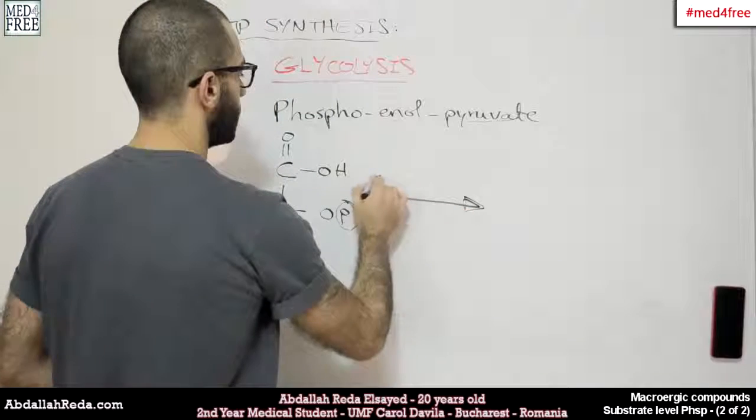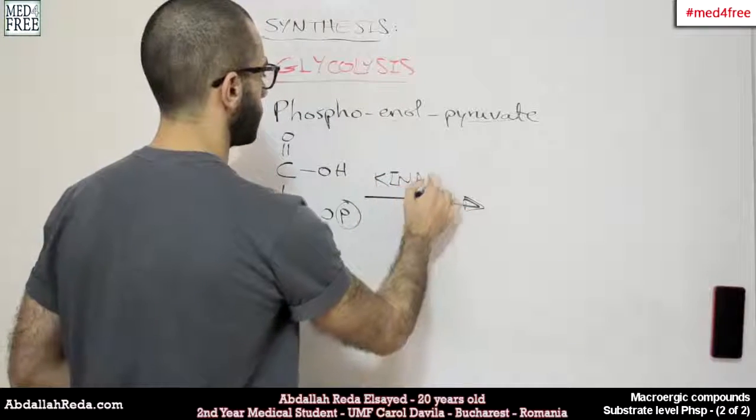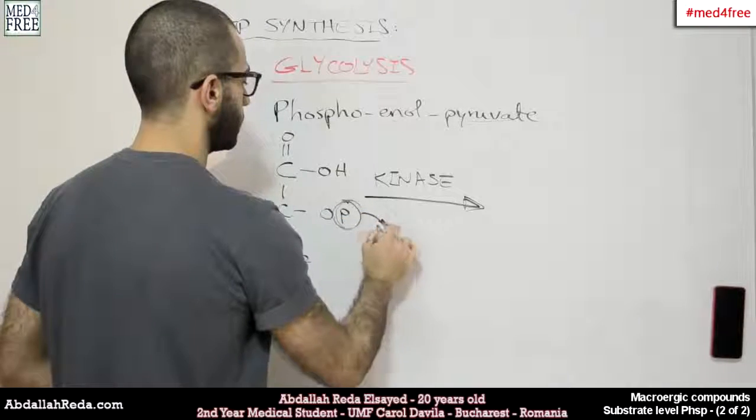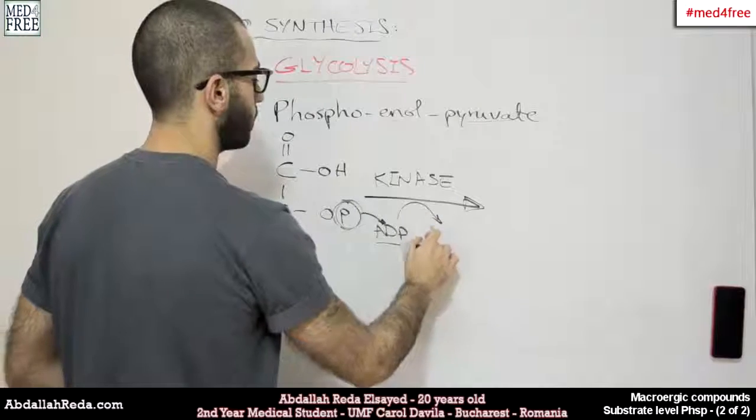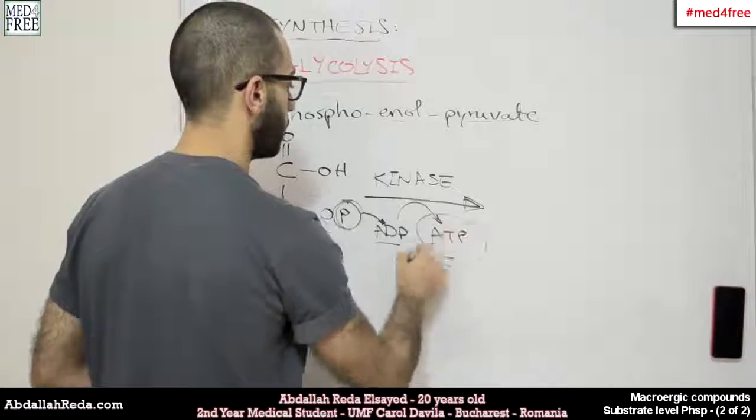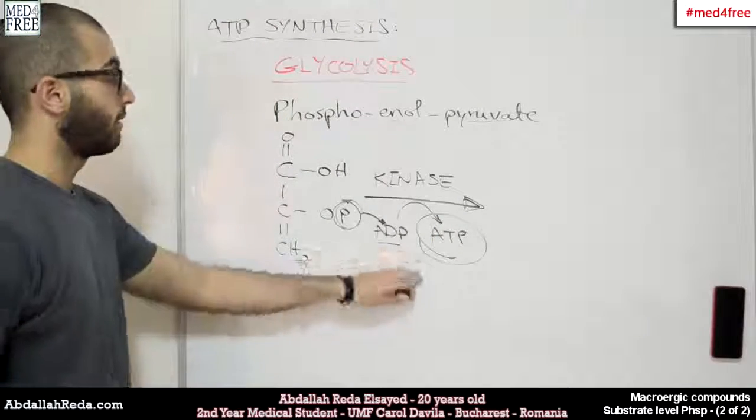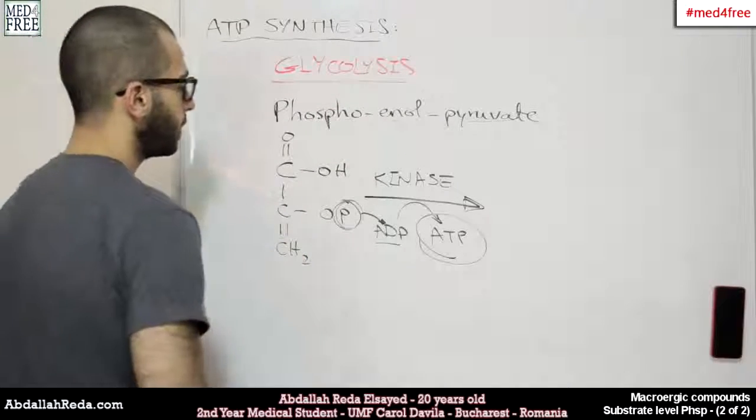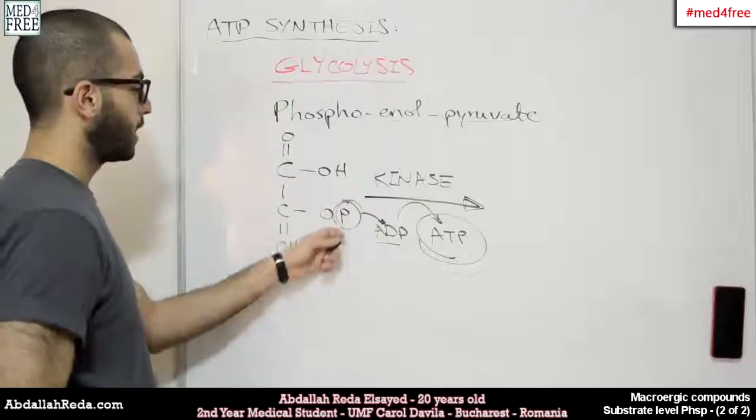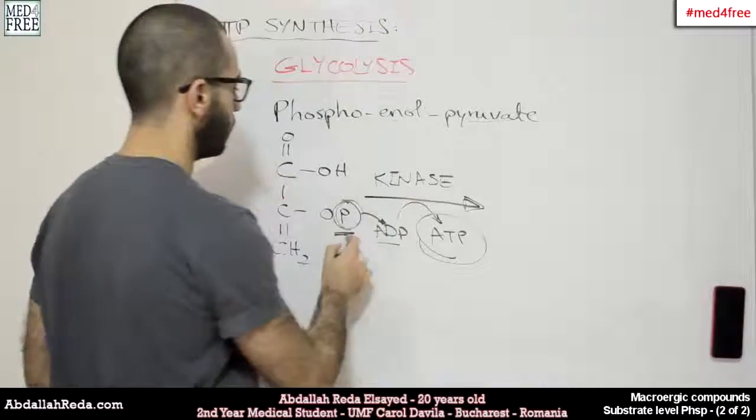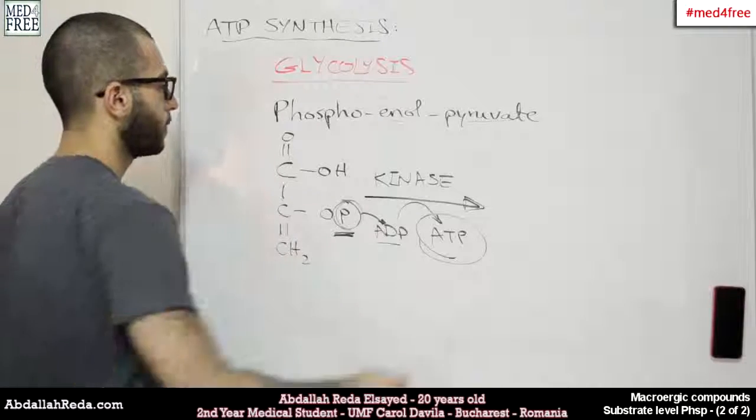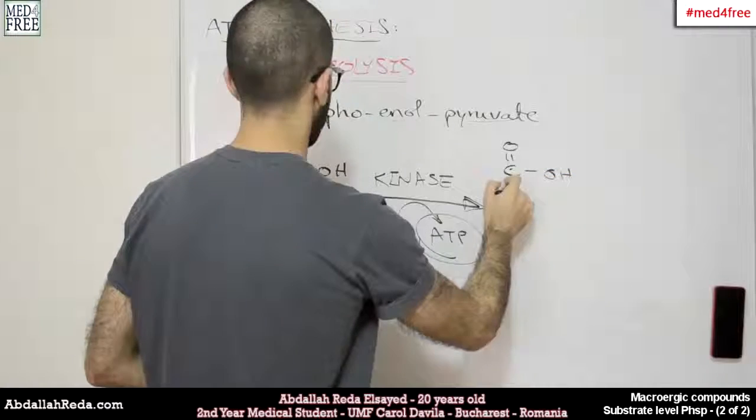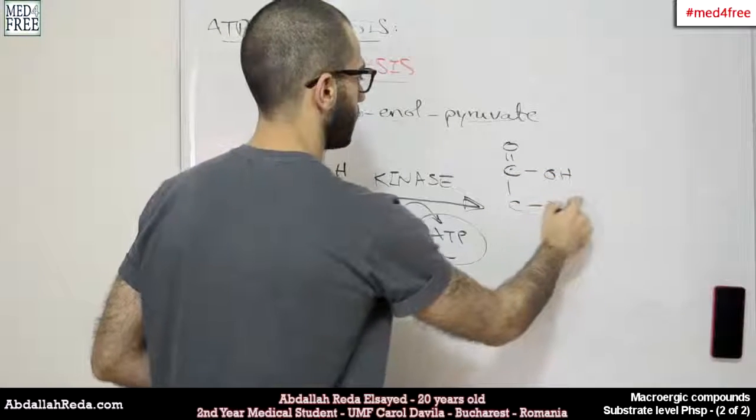Again, we have a kinase. The kinase would take that phosphoric acid group, add it to an ADP molecule. The ADP molecule would be changed into an ATP molecule, and we have our ATP synthesized. It will add a hydrogen instead of the removed phosphoric acid group, and we would have our compound looking like that.